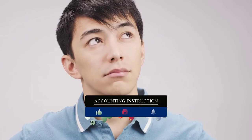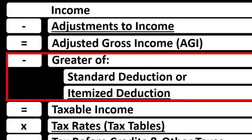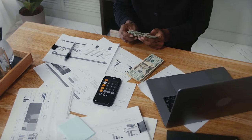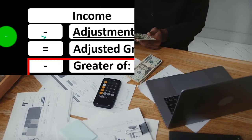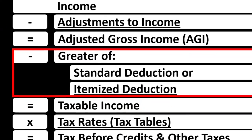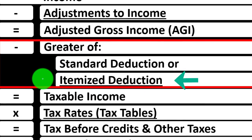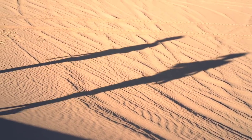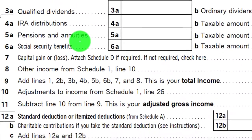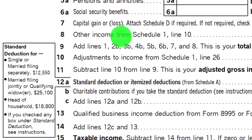We want to keep itemized deductions distinct in our mind from the adjustments to income — which you might hear called the above-the-line deductions, the deductions for adjusted gross income, or the Schedule 1 deductions. Anytime we think about the itemized deductions, we're comparing and contrasting them to the standard deductions to see which is larger, taking the one which is larger. That means we would only take the itemized deductions if they are greater than the standard deductions.